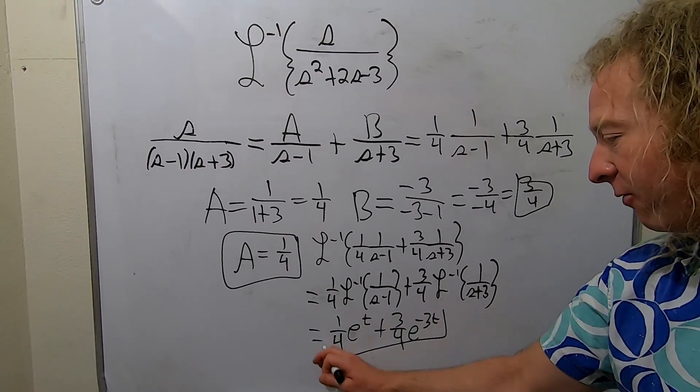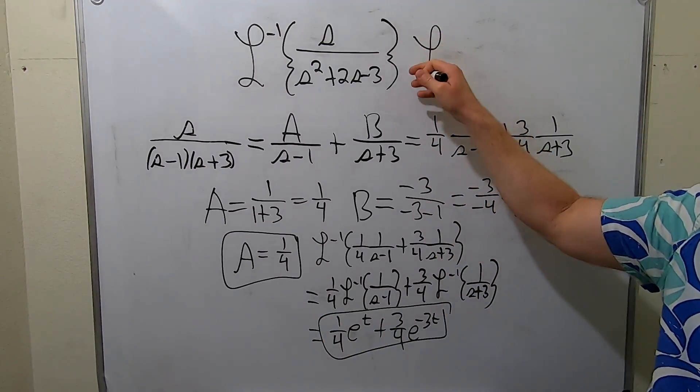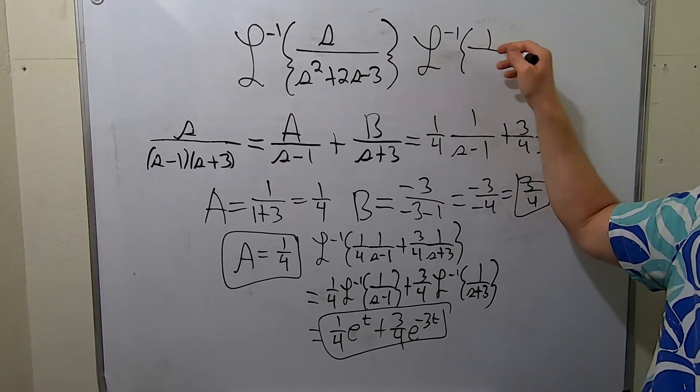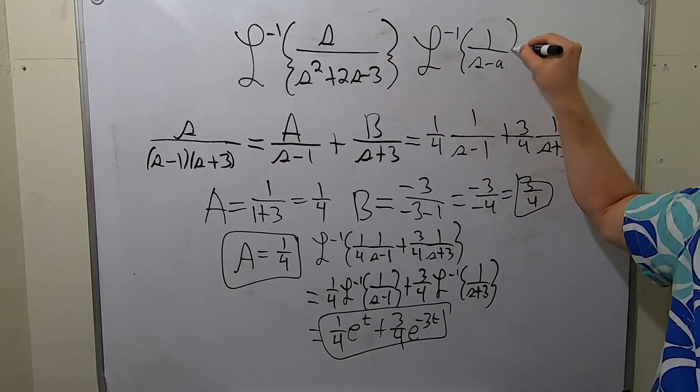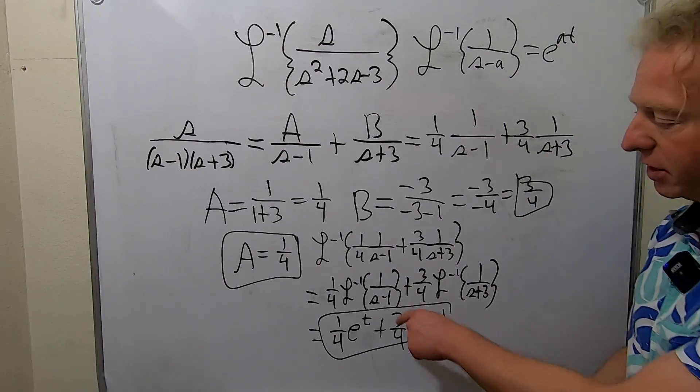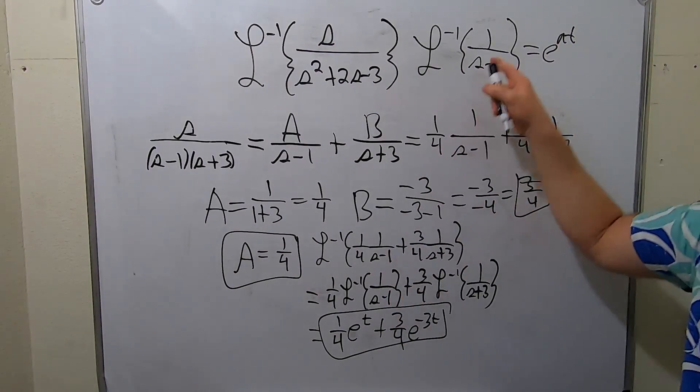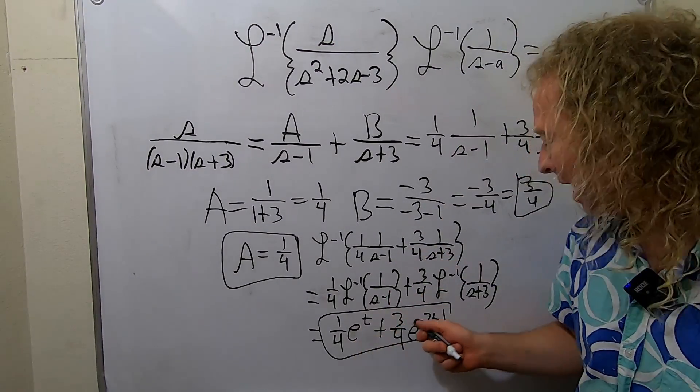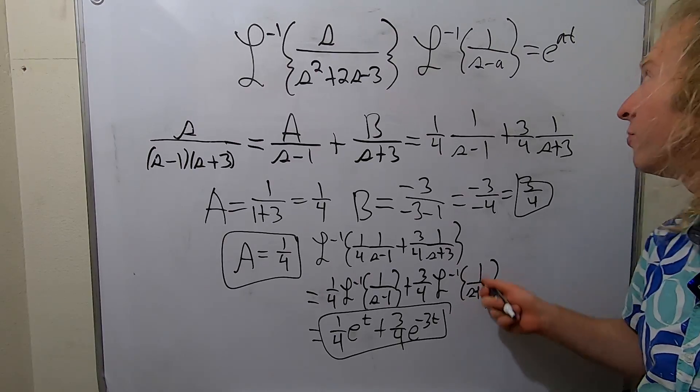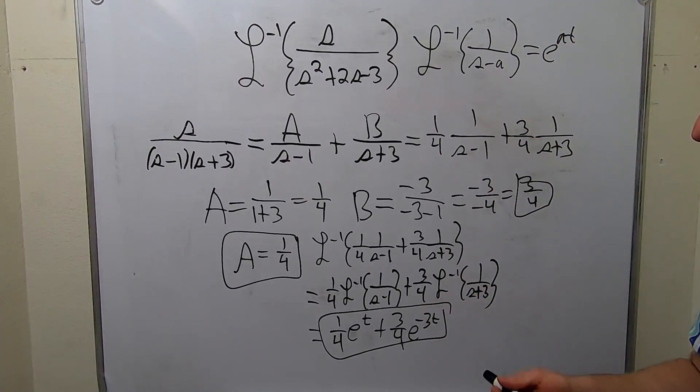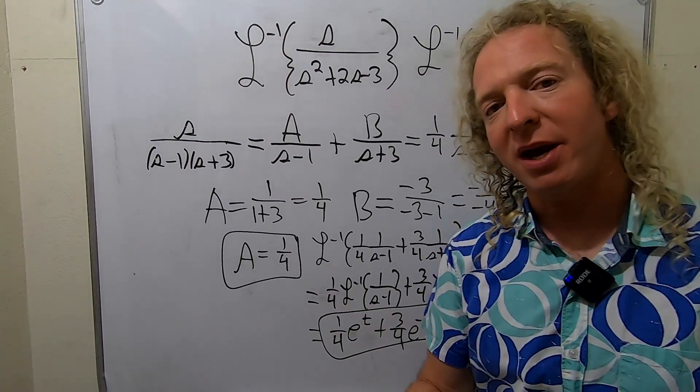How do I know that? There is a formula, right? If you have the inverse Laplace of 1 over S minus A, that's equal to E to the AT. So in this first example here, A is 1. So you simply get E to the T. Here it's S minus negative 3. So that gives you E to the negative 3T. I hope this video has been helpful.